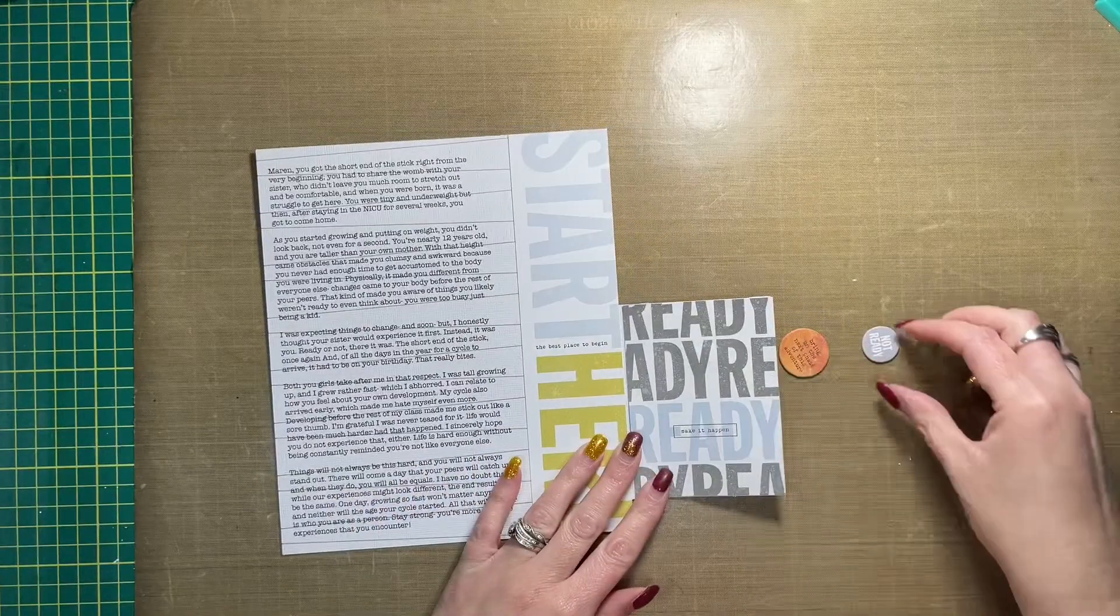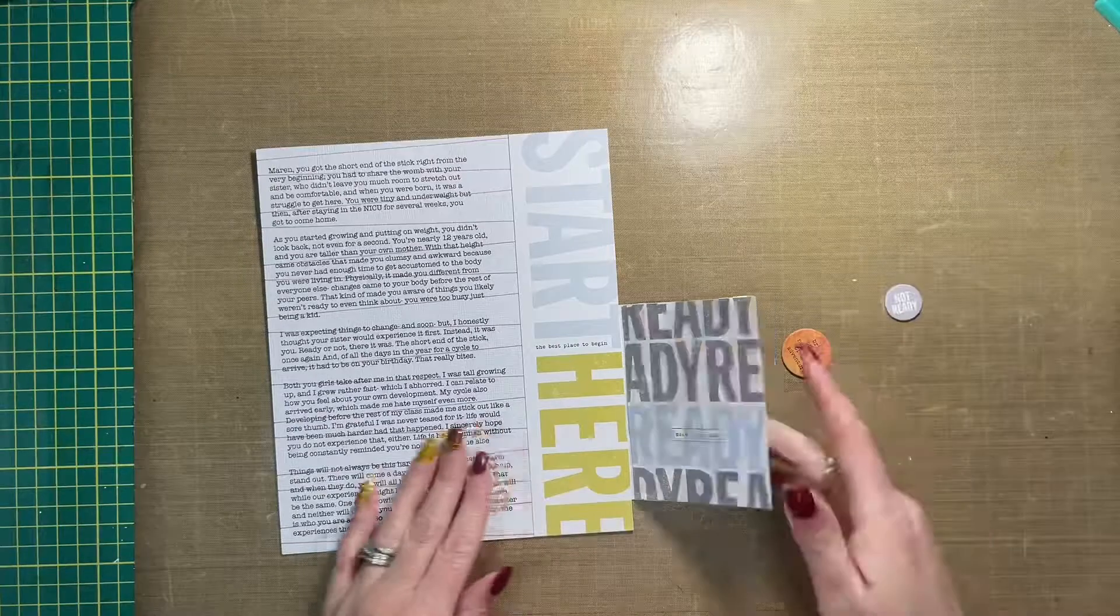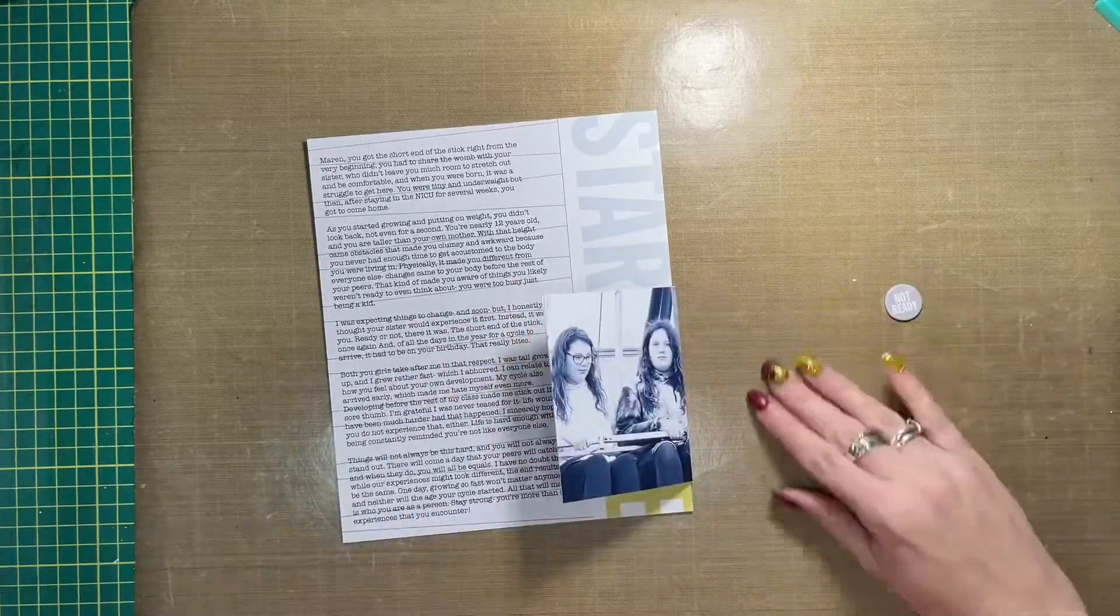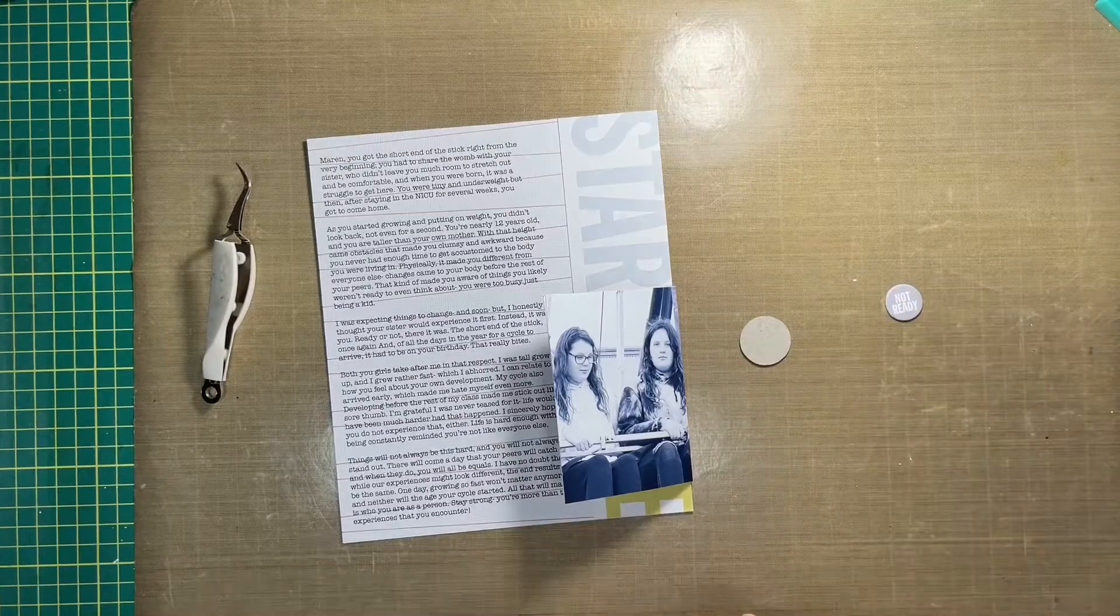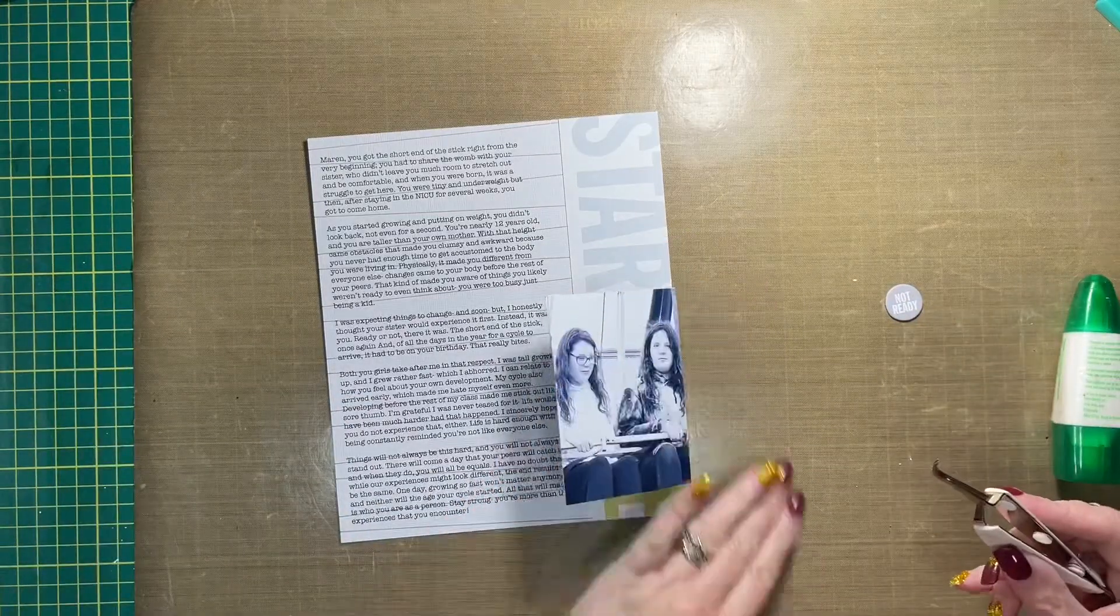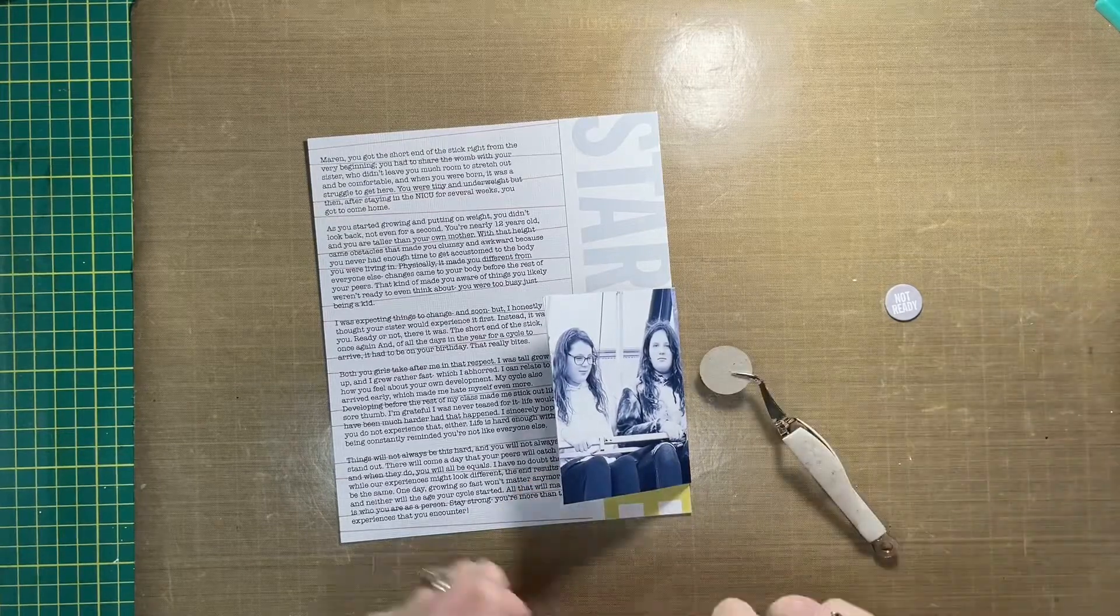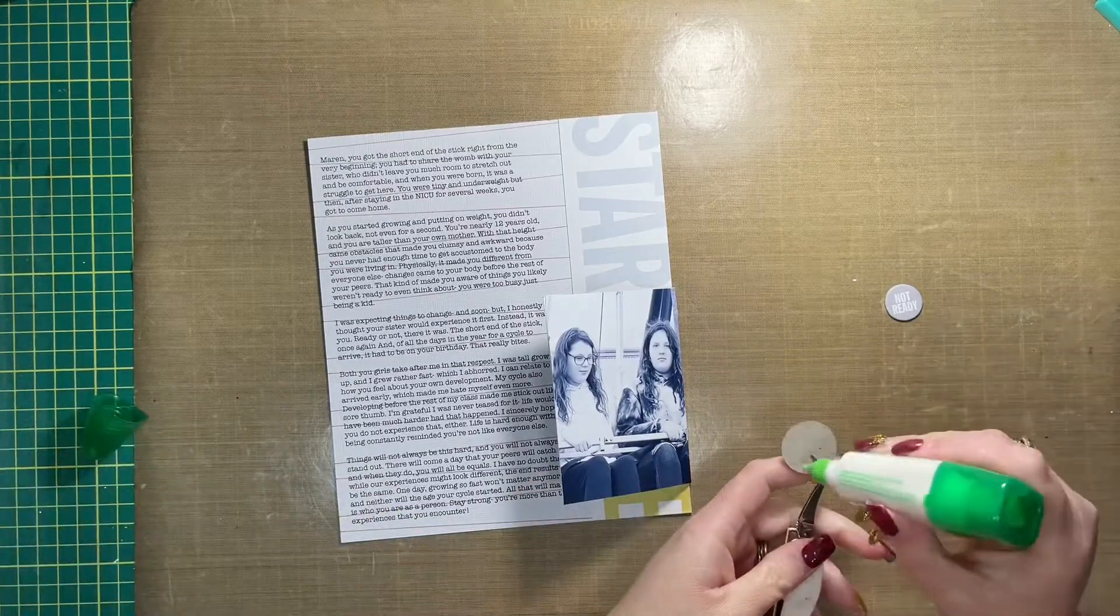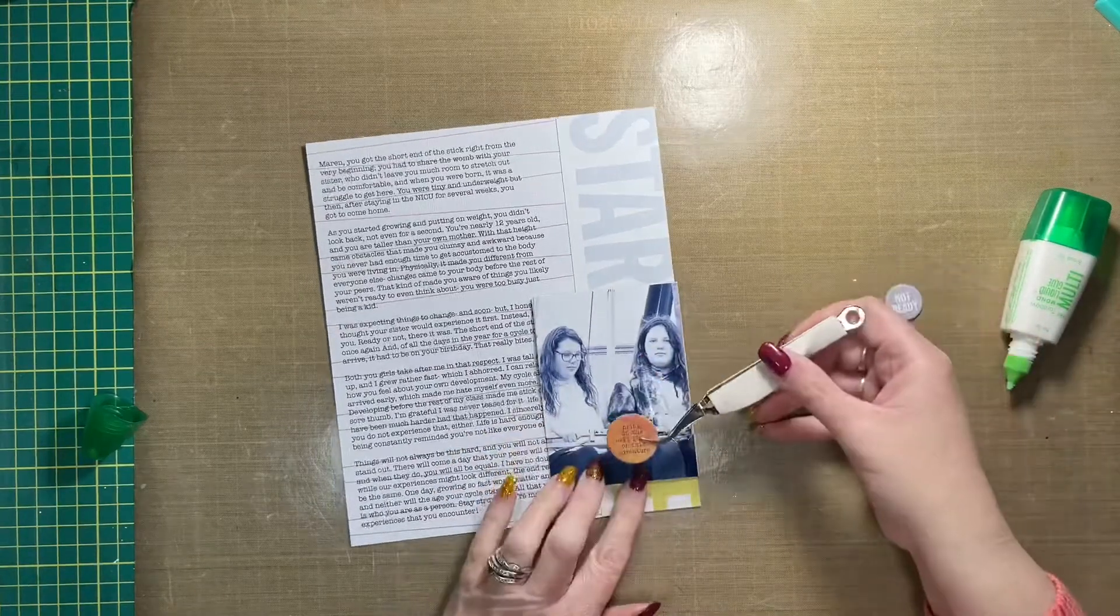But I decided to add this kind of pink and yellow one that says something about starting the next phase of this adventure, which I thought worked perfectly well too. So I'm just going to use my liquid glue to attach that to the bottom of my photo.